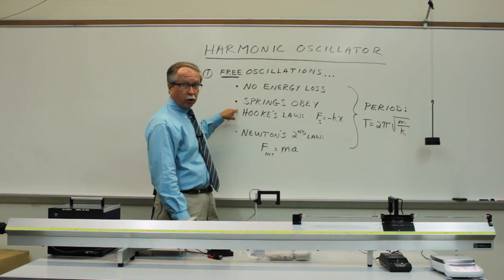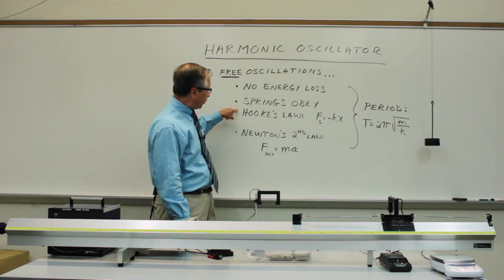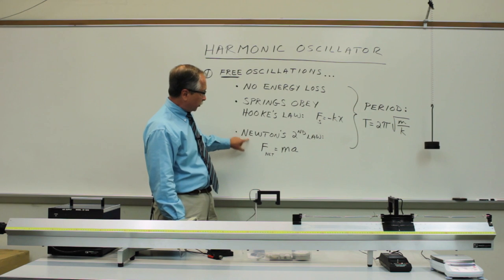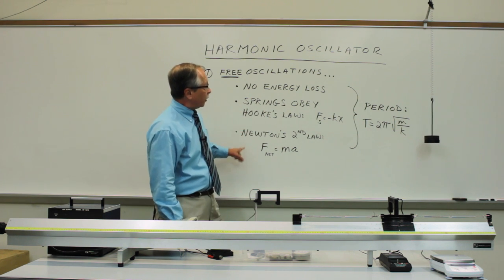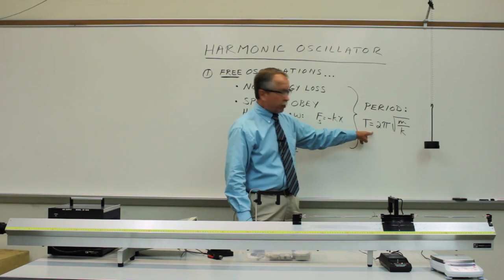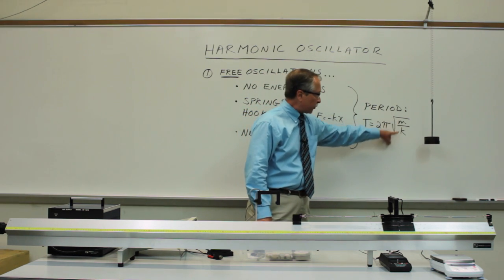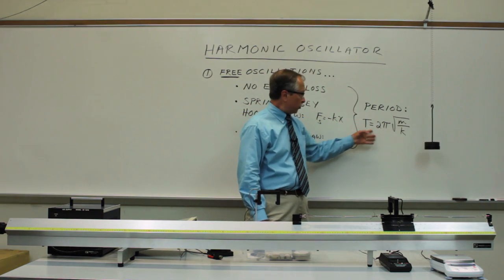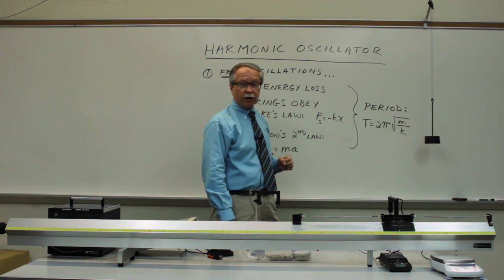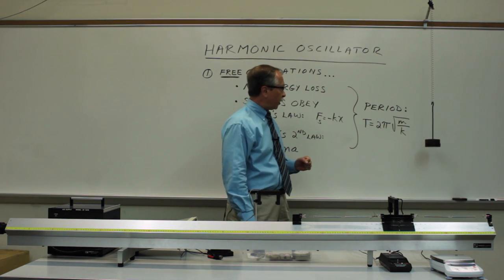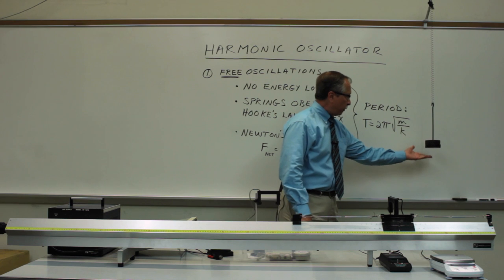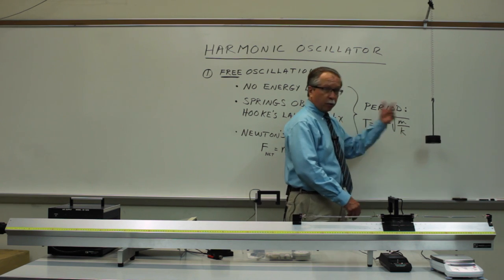So if we make all of these assumptions—no energy loss, Hooke's law describing the behavior of the springs, and Newton's law describing the motion of the system—what we get is a period for the mass spring system that's related only to the mass and to the spring constant according to the equation T equals 2π root m over k. So if we change the mass of the system, the period will change.